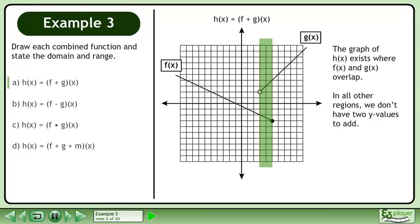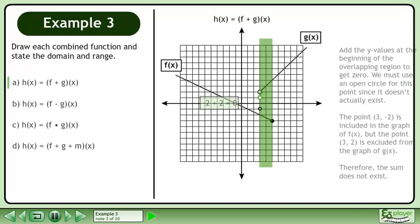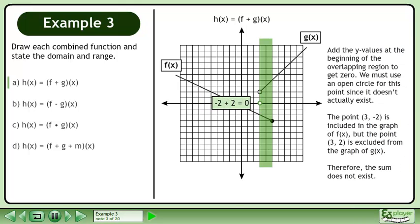The graph of h exists where f and g overlap. In all other regions, we don't have two y values to add. Add the y values at the beginning of the overlapping region to get zero. We must use an open circle for this point since it doesn't actually exist — the point is included in the graph of f, but the point is excluded from the graph of g. Therefore, the sum does not exist.